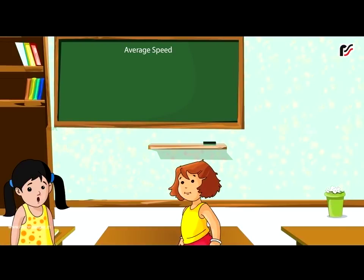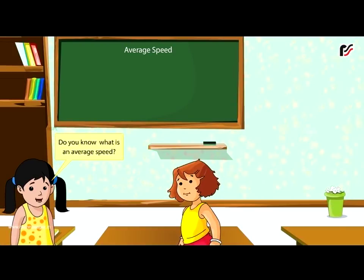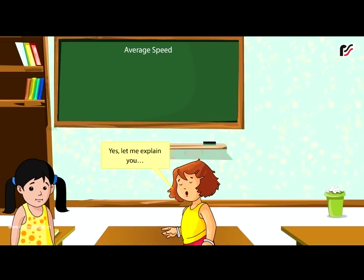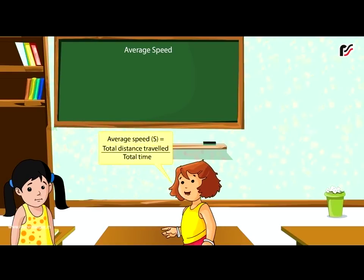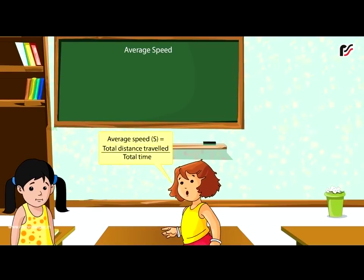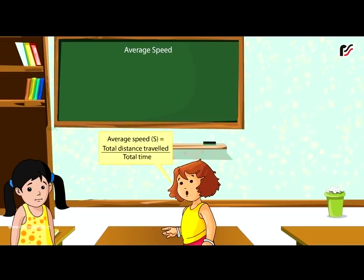Average Speed: Do you know what average speed is? Average speed (S) is equal to total distance travelled divided by total time.